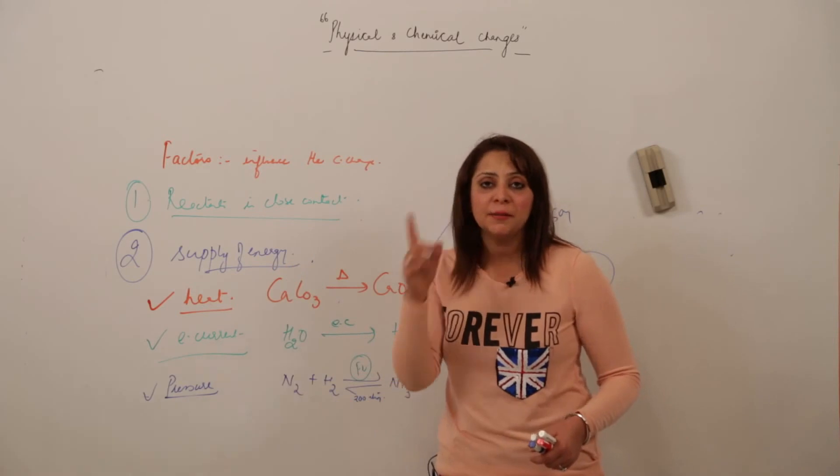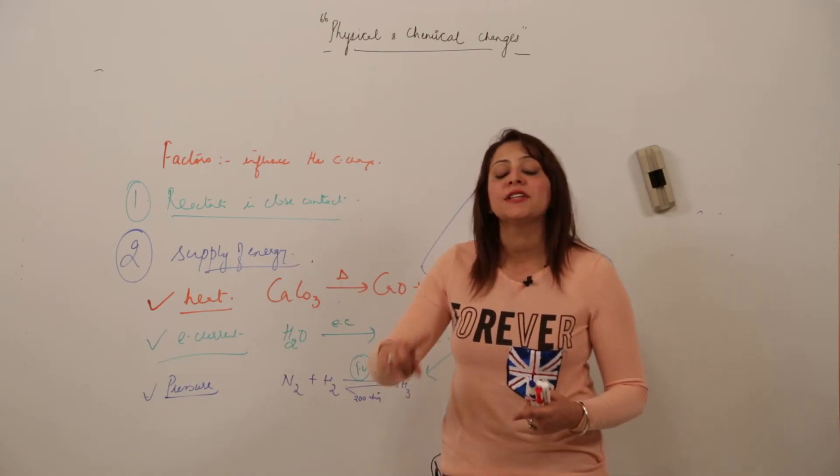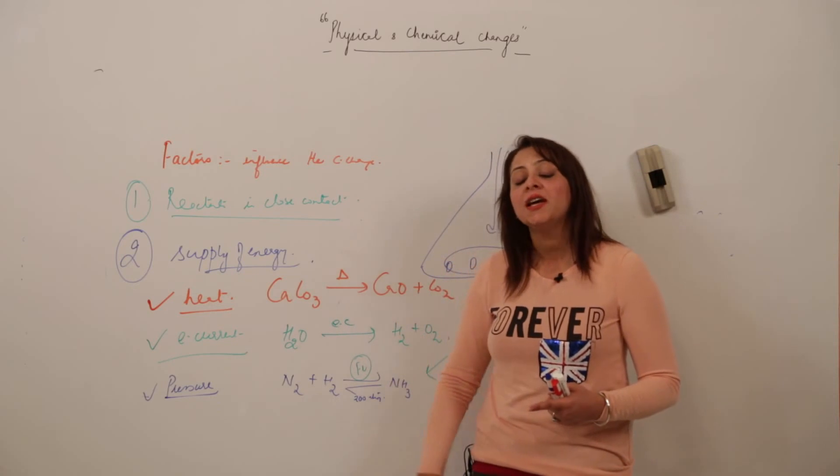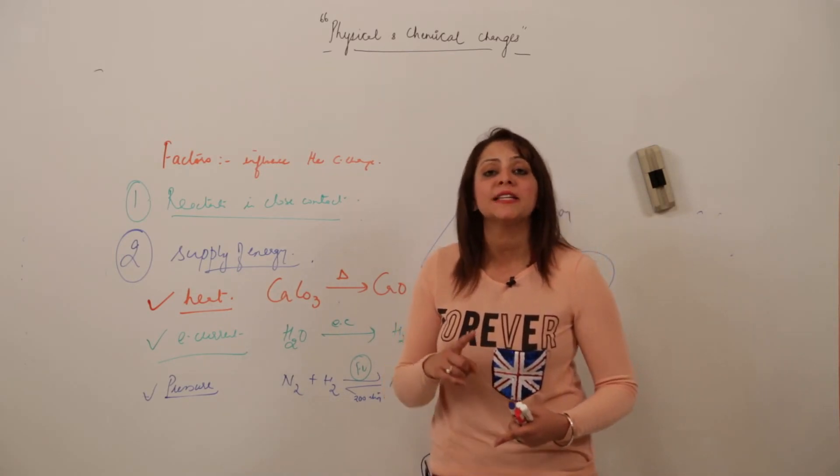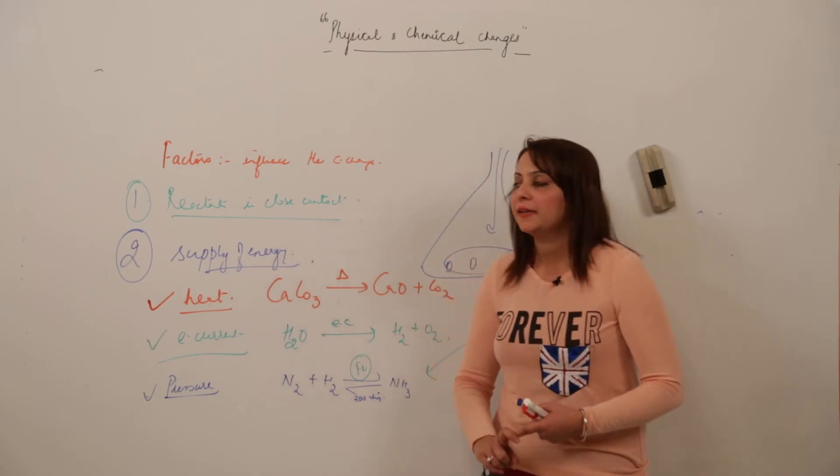Everything needs to attain stability, and the state which corresponds to stability possesses the least energy. Lesser the energy it will possess, maximum will be the stability in that case.